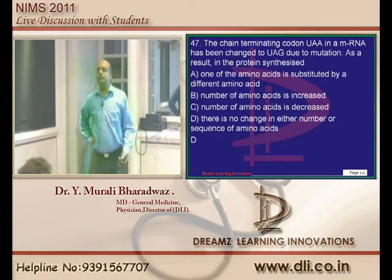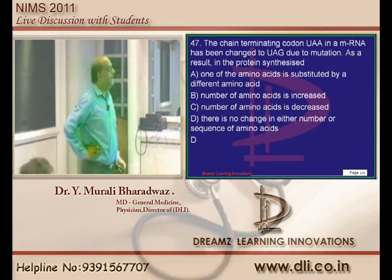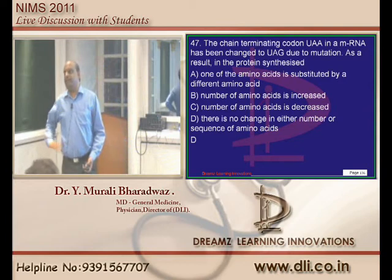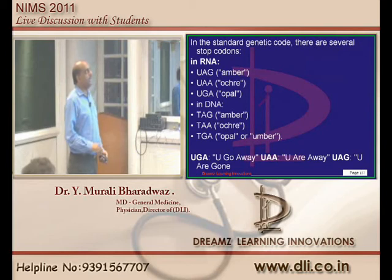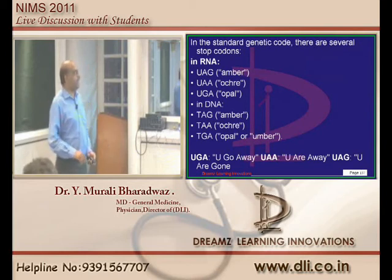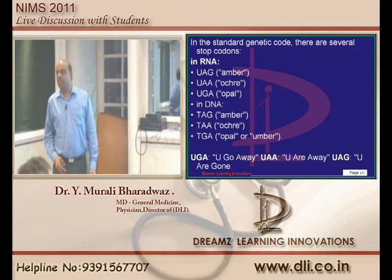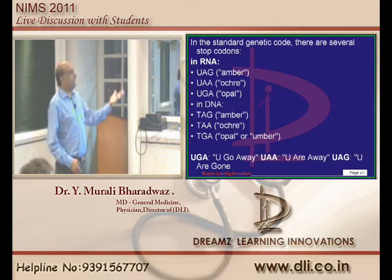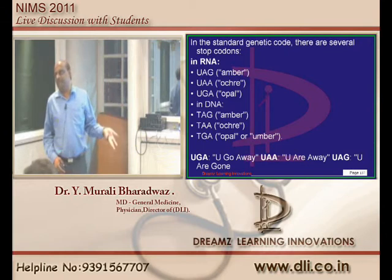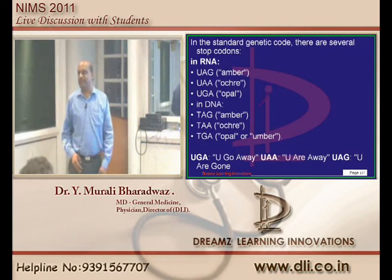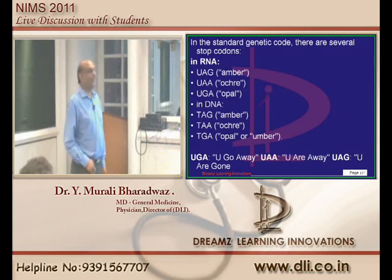If UAA becomes UAG, what is the result in the protein synthesized? There are three stop codons in RNA: UAG, UAA, and UGA. So even if one stop codon is replaced by another, it is still going to be a stop codon. The protein synthesis will terminate at the same point regardless of which stop codon is present.